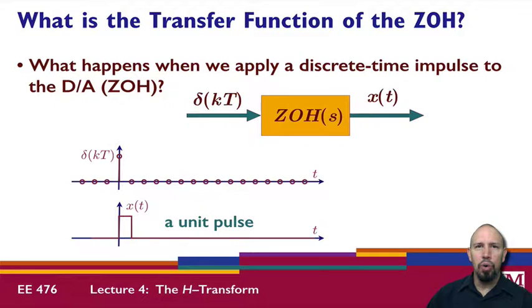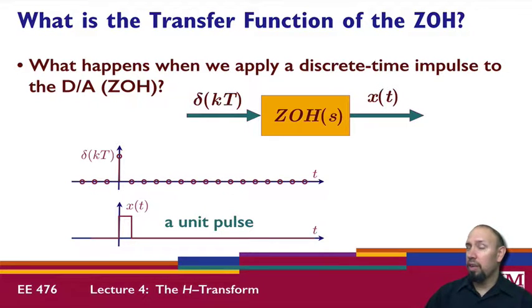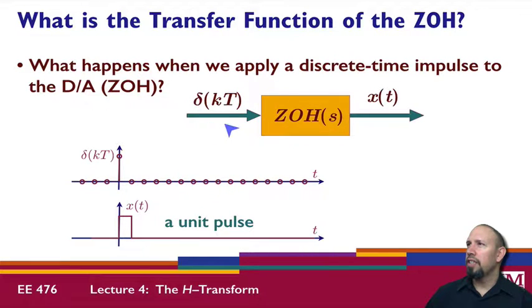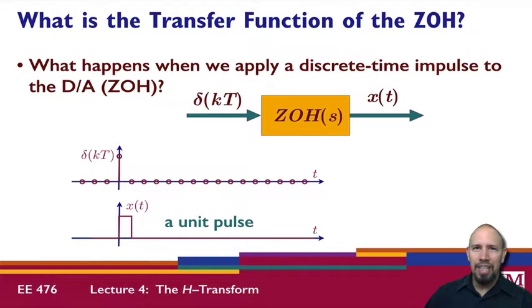Both of these involve the use of a zero order hold and how it affects a system. We're going to find the transfer function for a zero order hold. A discrete time delta input enters the zero order hold and the output is a continuous time output — so we have two different domains. When we call this the zero order hold of S, the delta here is in essence a Dirac delta function, as opposed to a Kronecker delta function.